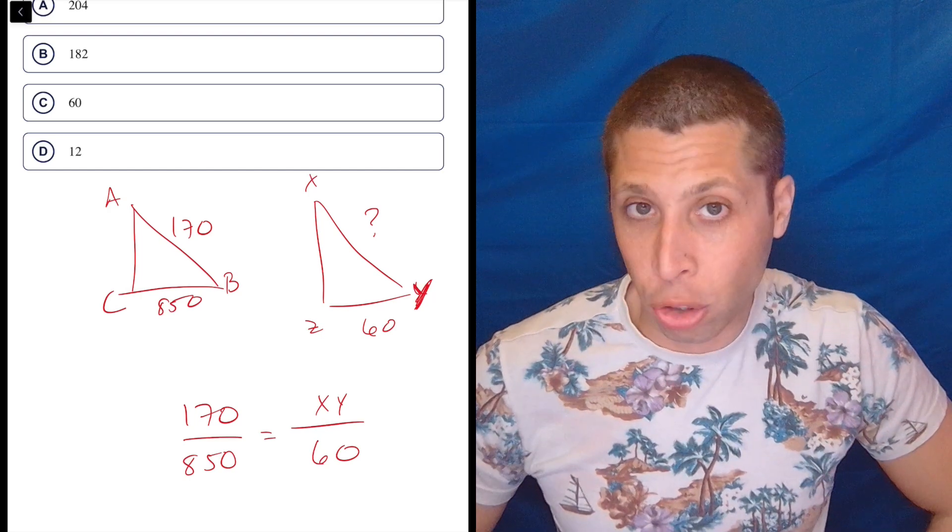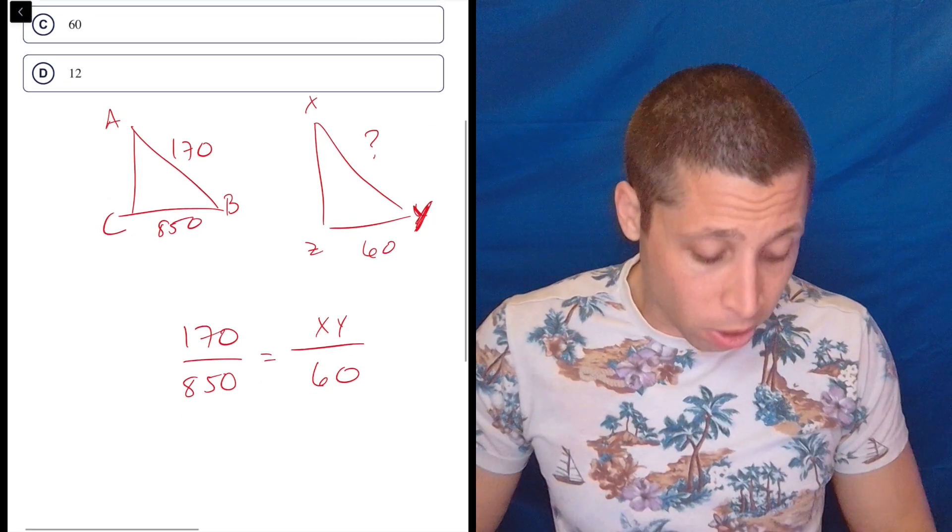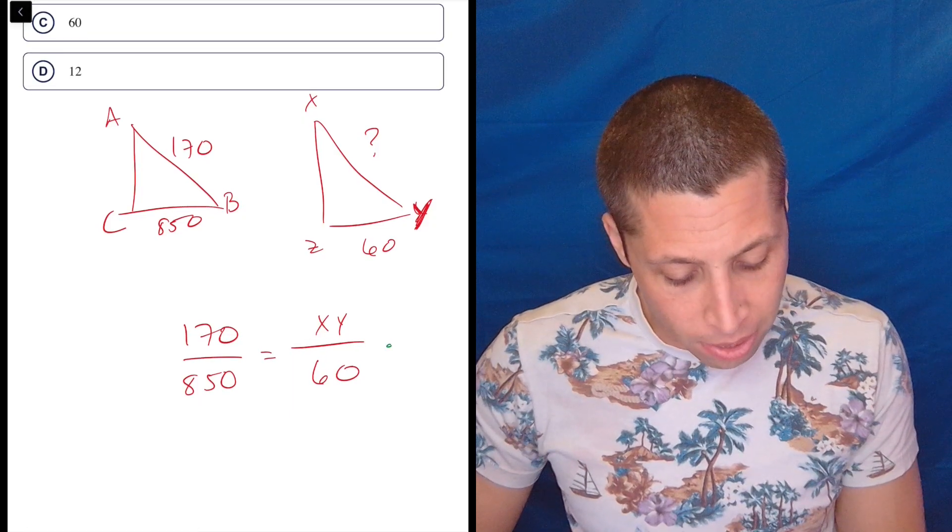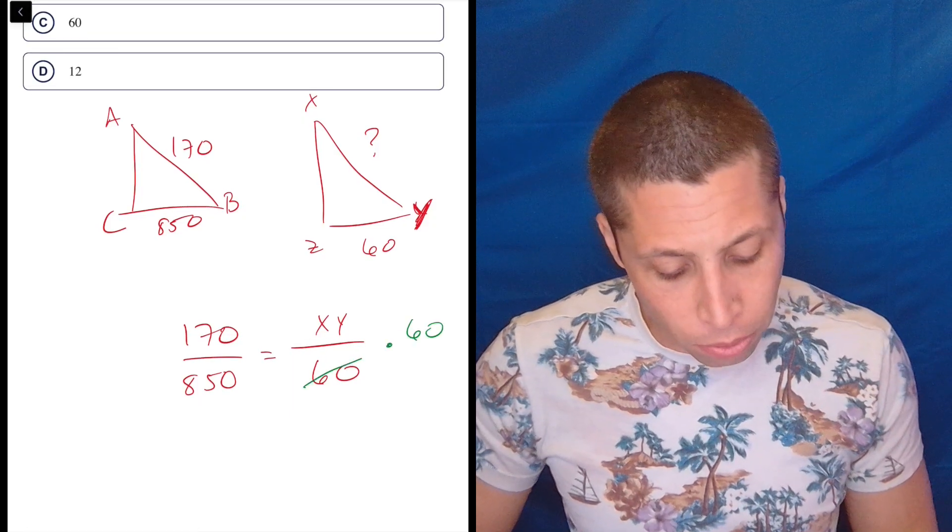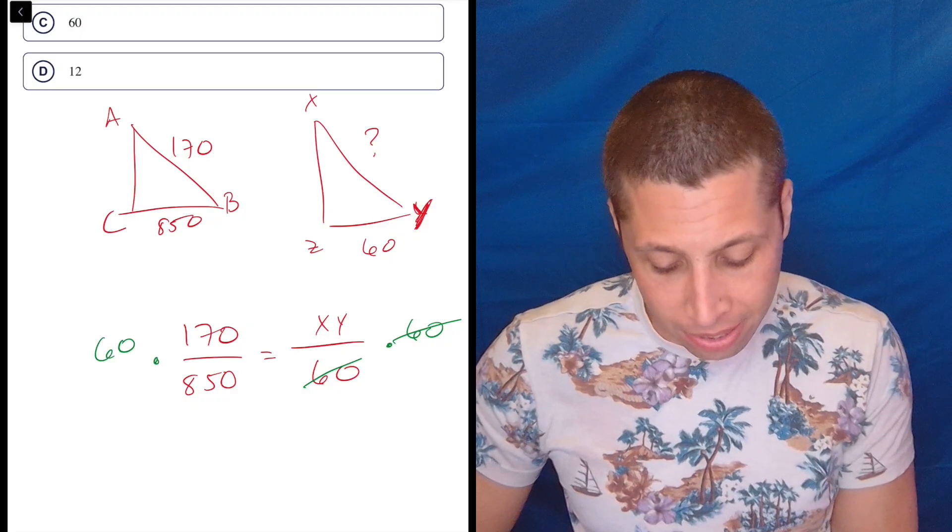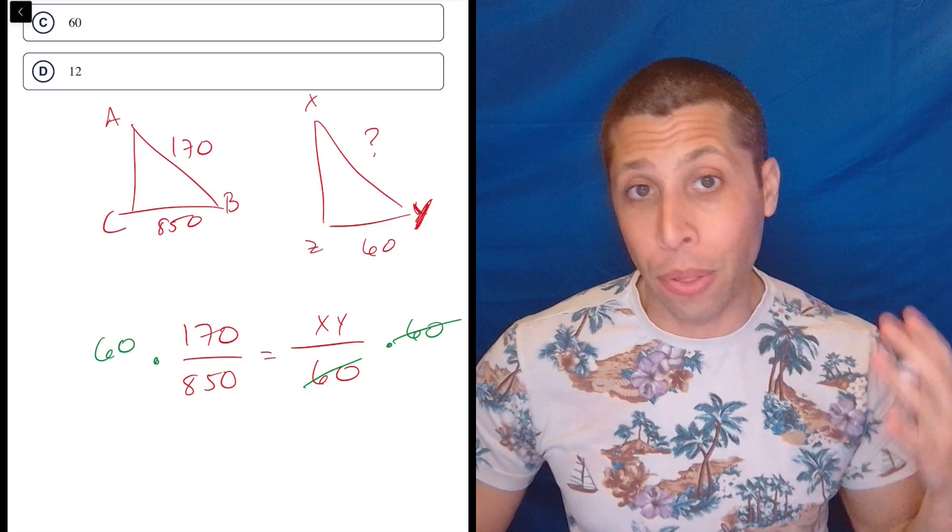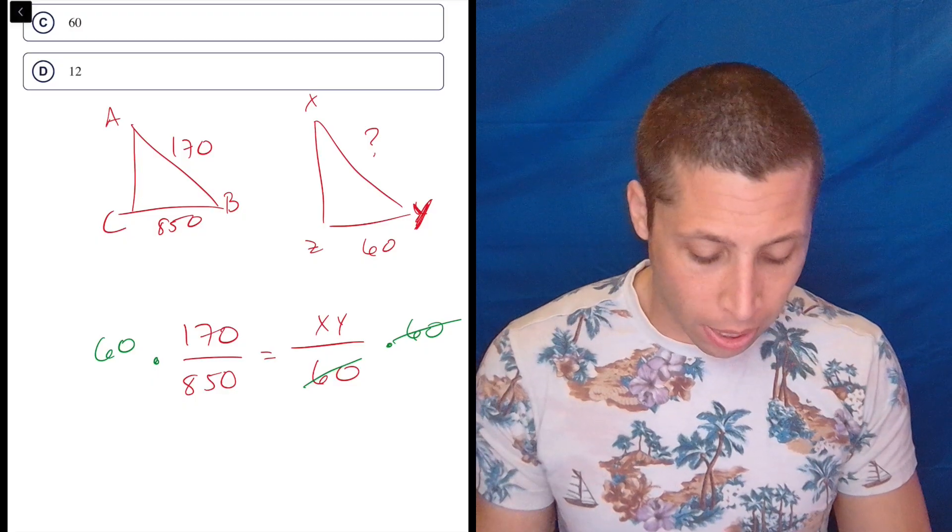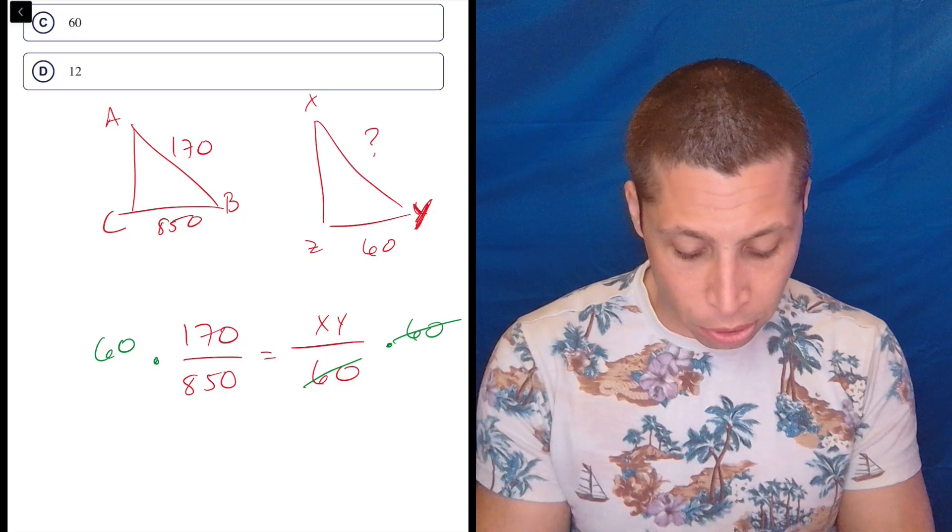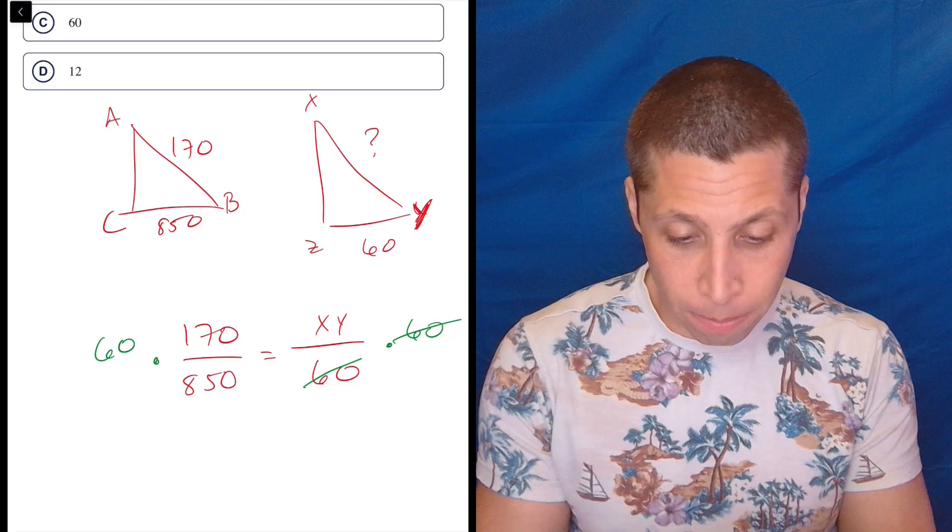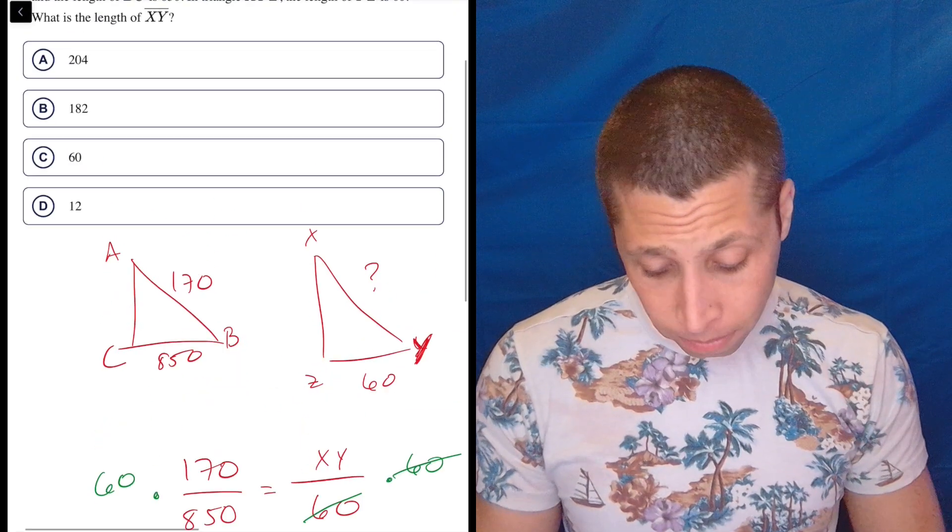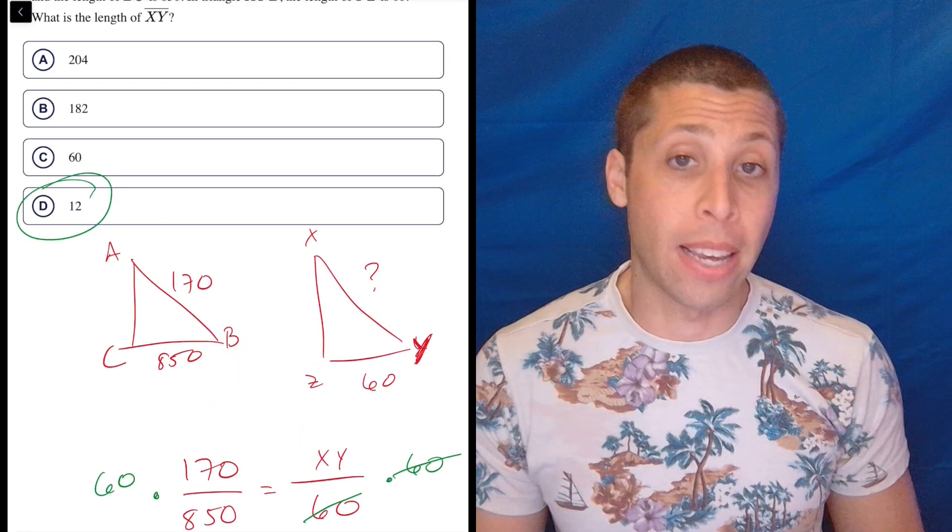So now it's just a cross-multiply and divide situation, but you also can skip the cross-multiply because we can just get XY alone by multiplying both sides by 60, and this is why I put the missing piece on the top, because if the missing piece is on the bottom, you can't do that as easily. So now in my calculator, I'm just going to do 60 times 170 and divide by 850, and I get 12. There you go. Choice D is the answer.